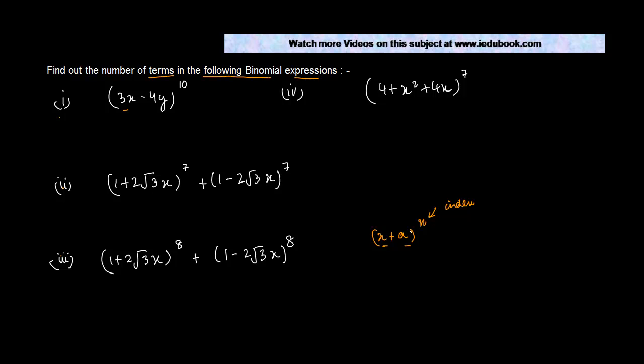Now in this case if you compare 3x minus 4y to the power 10 with this form of binomial expression, you get x is equal to 3x, you get a is equal to minus 4y, and you've got n is equal to 10.